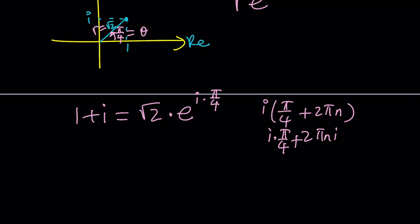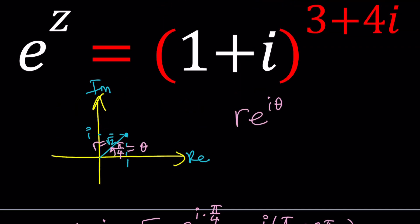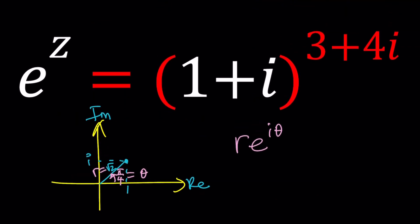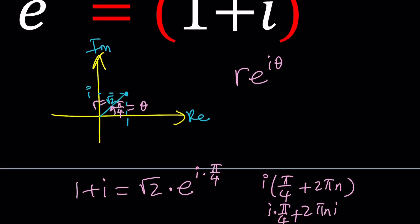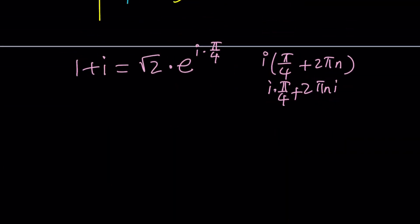Now let's go ahead and replace 1 plus i with that. What are we going to do with the 3 plus 4i? Pretty much nothing. The exponent doesn't matter that much, but the base is more important at this point. So let's go ahead and write this as follows. Then e to the power z equals root 2 times e to the power i times pi over 4, and then we're going to go ahead and raise it to the power 3 plus 4i.